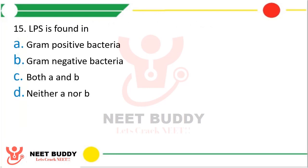Question number fifteen. LPS, i.e. lipopolysaccharide, is found in: option A gram positive bacteria, option B gram negative bacteria, option C both gram positive and gram negative bacteria, or option D neither gram positive nor gram negative bacteria. The correct answer is option B — it is present in gram negative bacteria.